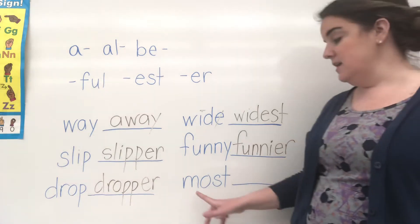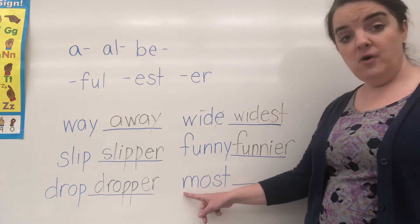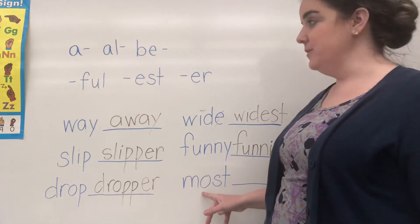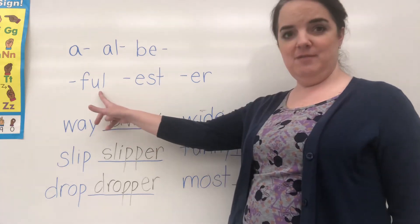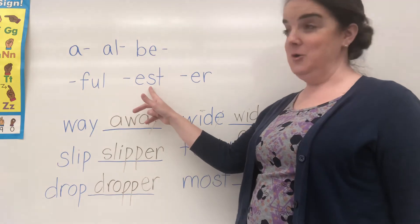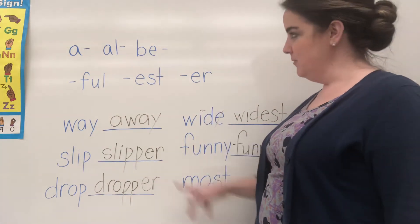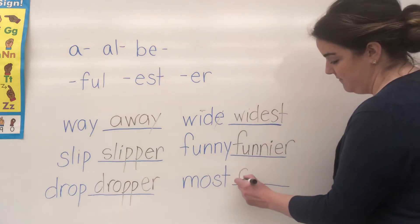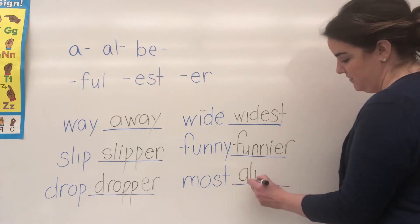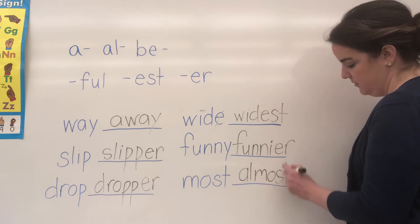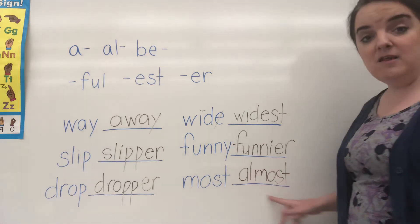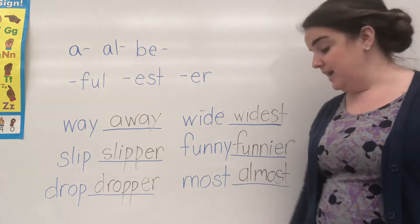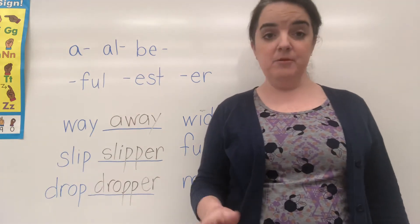All right, last one. This word is most. A-most? No. What about mostful, mostest, moster? No. What about all-most? Yes. Almost. So we're going to add our prefix A-L and then our root word most to make our new word almost. All right, very good. So that's just a little review today of adding a prefix or a suffix to a word. Hope you're paying attention.